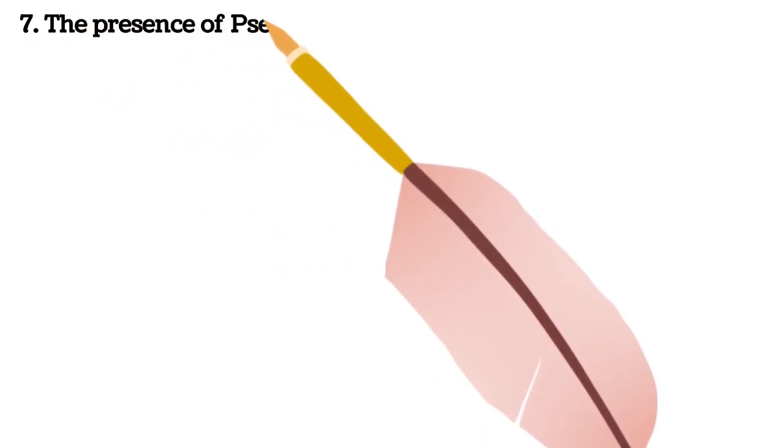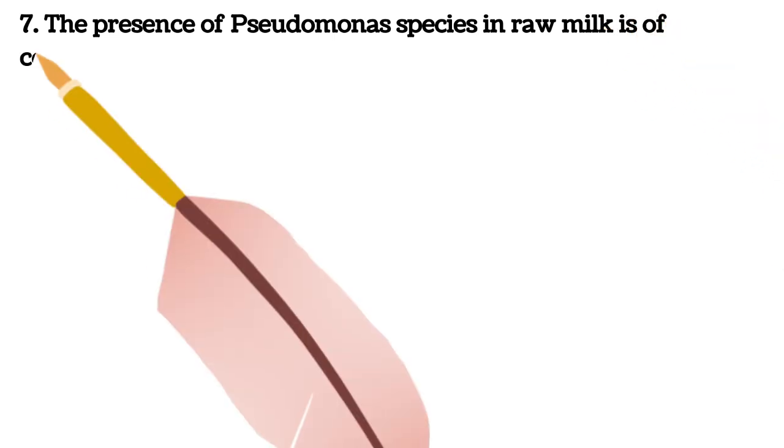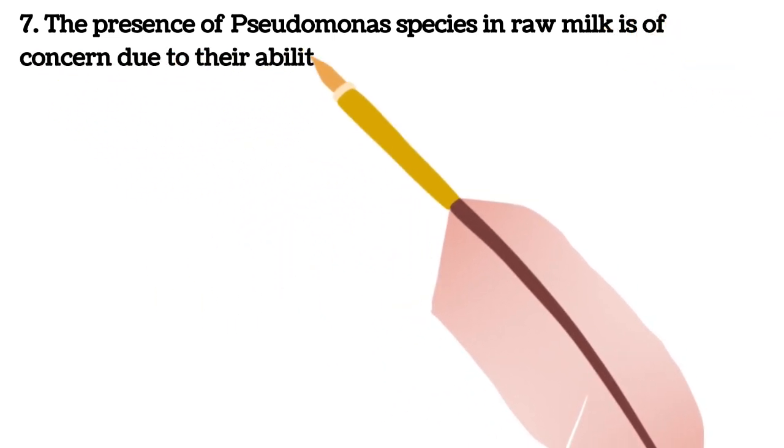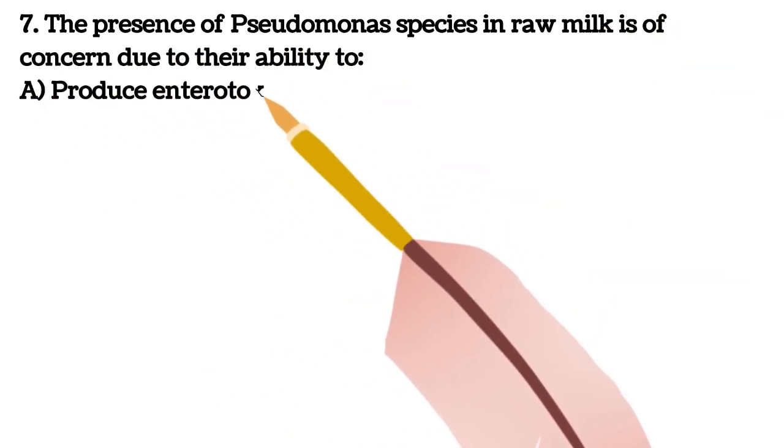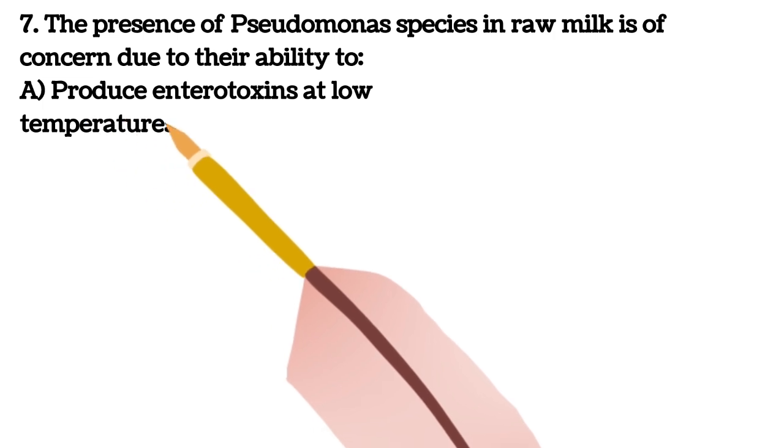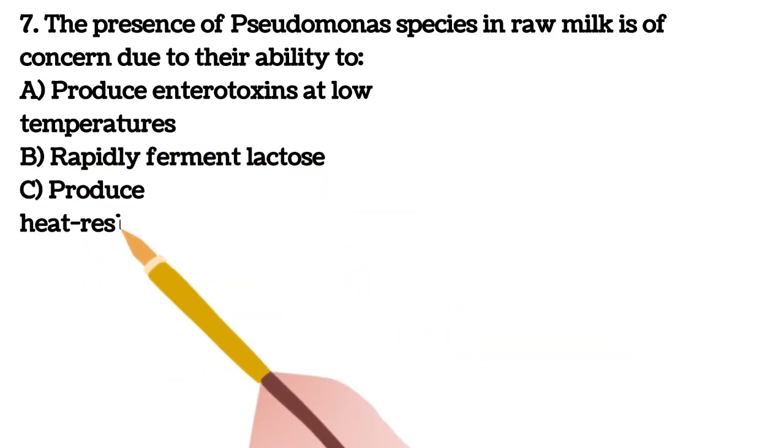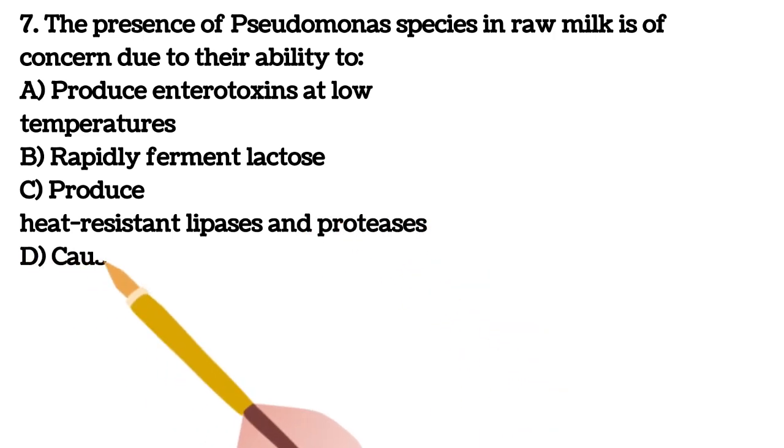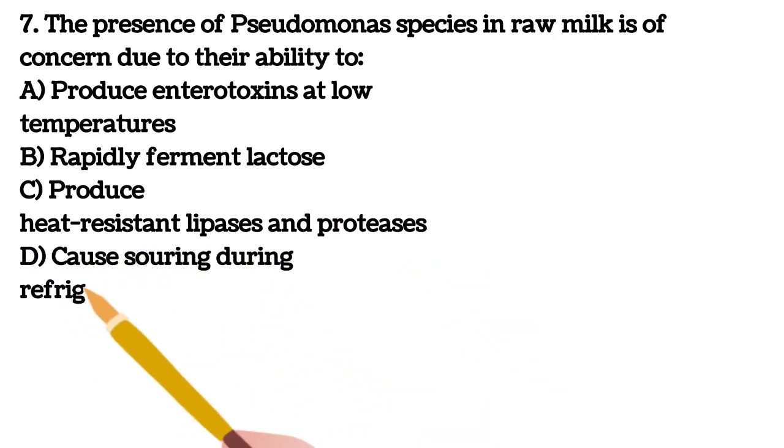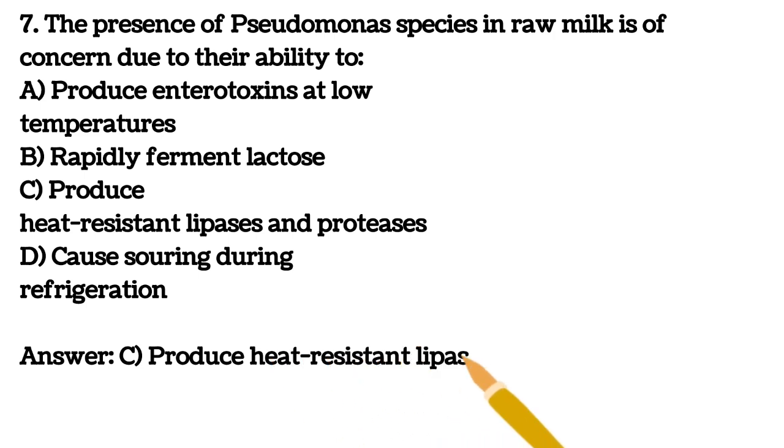Seventh question. The presence of Pseudomonas species in raw milk is of concern due to their ability to A. produce endotoxins at low temperature B. rapidly ferment lactose C. produce heat-resistant lipases and proteases D. cause souring during refrigeration. Your answer is C, produce heat-resistant lipases and proteases.